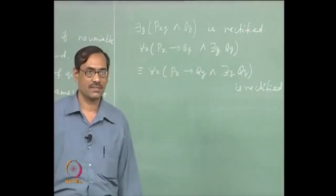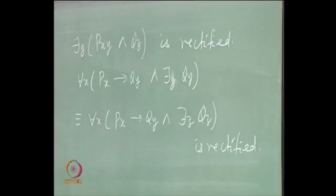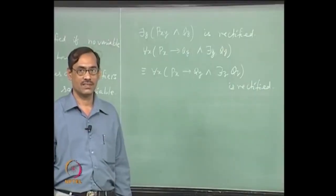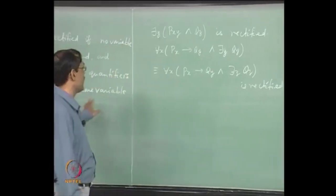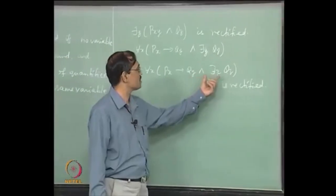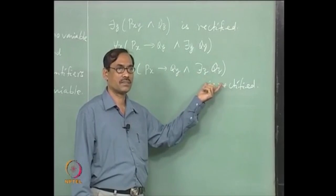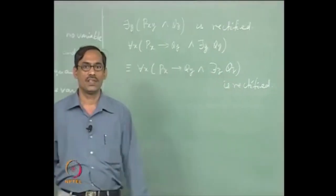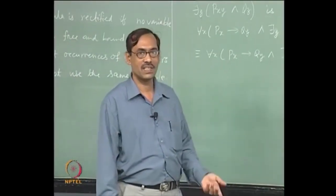Rectification is a simple process. Our next step is to bring all the quantifiers to the beginning. We have to use certain laws — we need equivalences. Once the formula is rectified, you can use distributive laws on sub-formulas. For distribution laws, you need variables to be differently named; otherwise the distribution may not occur correctly.